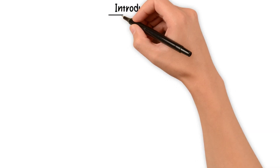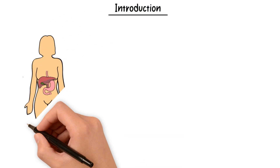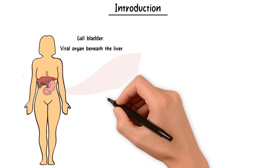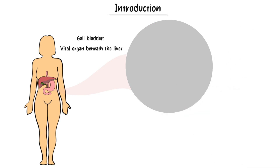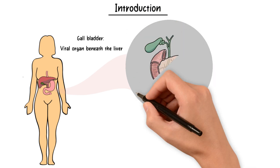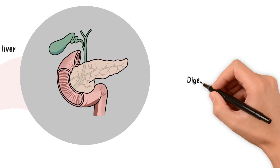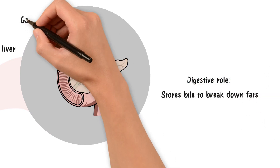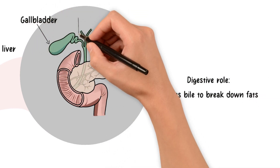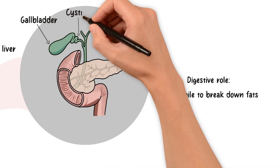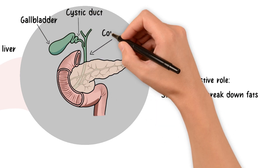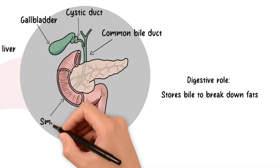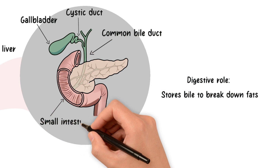The gallbladder is a remarkable organ located right beneath the liver. It plays a crucial role in our digestive process, storing bile produced by the liver, which helps break down fats. Bile flows to and from the gallbladder through cystic ducts, while the common bile duct carries bile to the small intestine, where it aids in digestion.